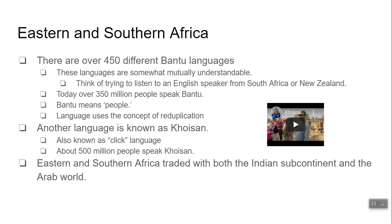Eastern and southern Africa is a little different — still grasslands, savannah, some forests and rainforests. There are really two big groups that live in eastern and southern Africa: one is the Bantu group and one is the Khoisan group.